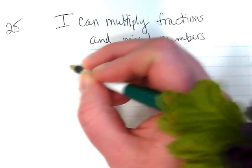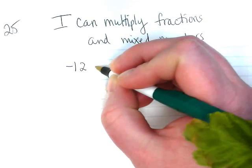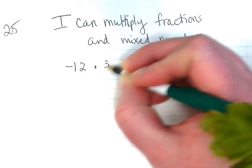So if you would write down this problem, negative 12 times 3 over 4.